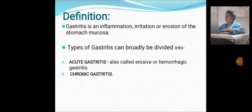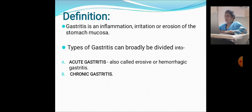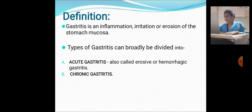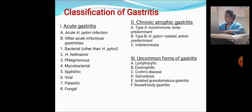Definition: gastritis is an inflammatory, irritational, or erosive condition of the stomach mucosa. Types of gastritis can broadly be divided into acute gastritis, also called erosive or hemorrhagic gastritis, and chronic gastritis.